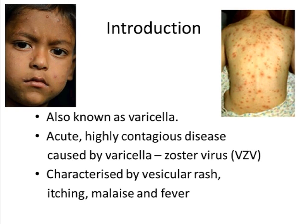Chickenpox is also known as varicella, and it derives its name from the causative agent, the varicella zoster virus, also known as VZV. This disease is acute in nature, highly contagious, and has the capacity to spread very fast from person to person. It is characterized by a vesicular itchy rash that spreads quickly to all parts of the body, associated with constitutional symptoms like malaise and fever.